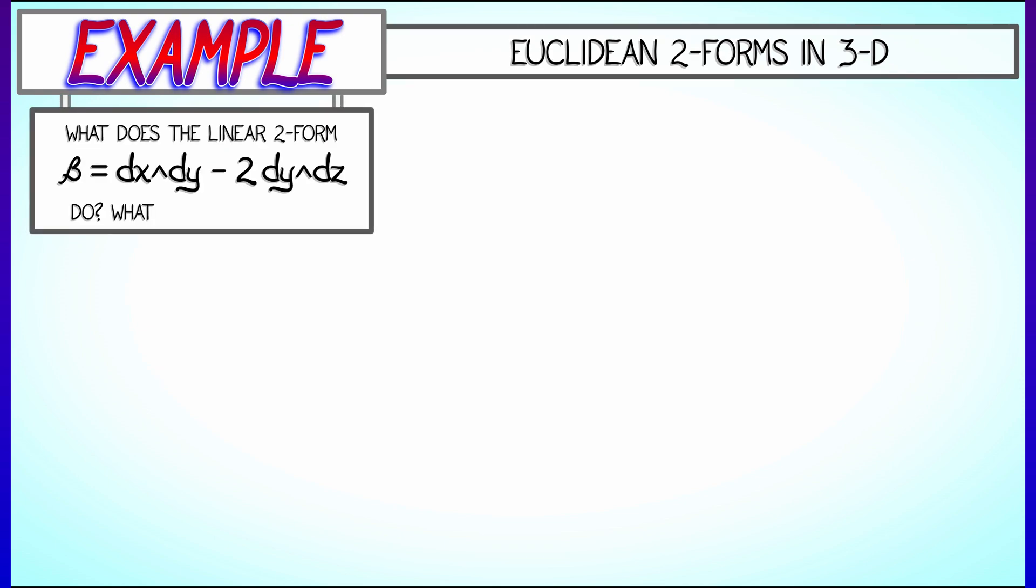Okay, let's take a look at some examples of two forms in 3D and try to make sense of it. First of all, what does the linear two form beta given by dx wedge dy minus 2 dy wedge dz do? What does it look like?